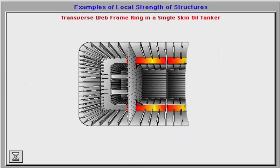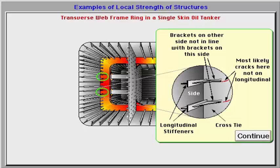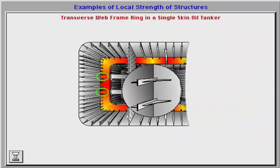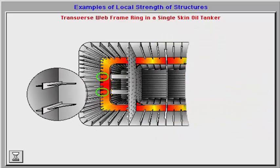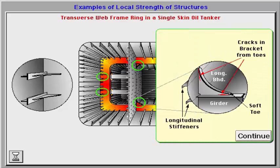We will now study the transverse web frame of a single skin oil tanker. Hard points will occur where stiffeners are crossing the web frames. Particular hard points are found where cross ties are fitted; they are axially loaded in tension and compression, but vertical forces and bending moments will also occur. Brackets must always be entering stiffeners and never end on open or non-stiffened plates.